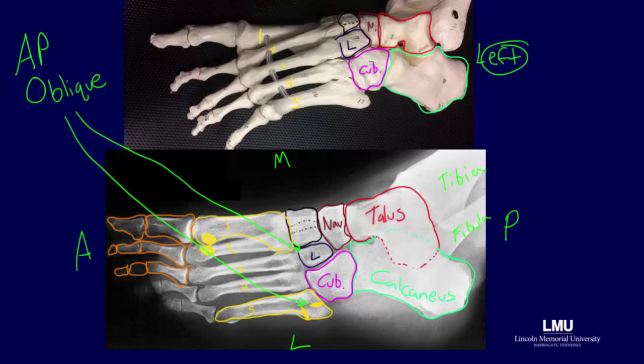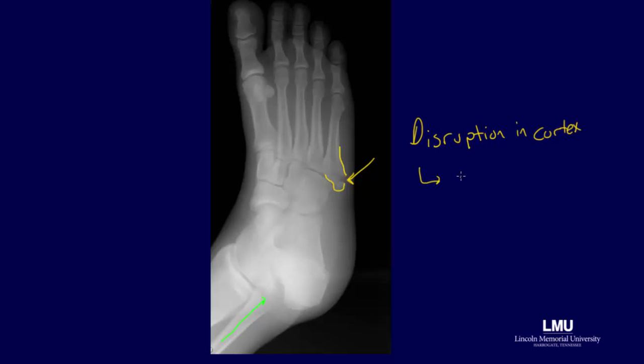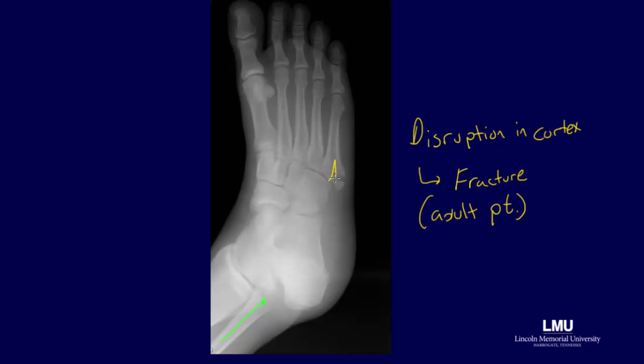Applying our systematic approach to this radiograph — starting proximally and proceeding distally — when we get to the tuberosity of the fifth metatarsal, we see a definite disruption in the cortex of the bone. This disruption is consistent with a Jones fracture in that it is transverse to the plane of the long bone. Since this is an adult patient, a Jones fracture is the most likely diagnosis. If instead this radiograph showed a disruption in the cortex of a child, we might suspect cartilage that has not yet calcified — and therefore this would not be a fracture but an apophysis.